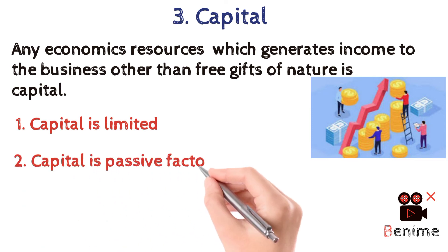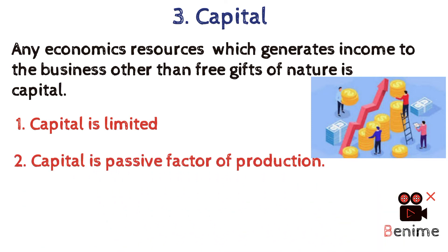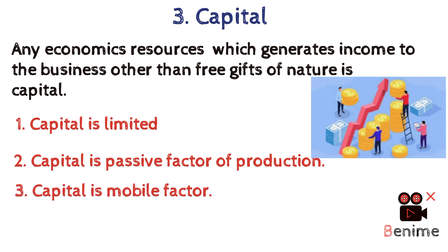Number two: capital is a passive factor of production, meaning capital cannot work by itself — it needs human beings to work upon it. Capital or money does not have legs or hands to work. Number three: capital is a mobile factor, meaning capital or money can be transferred from one place to another. Number four: capital is perishable, meaning capital will get exhausted or its value will reduce if not used on time.